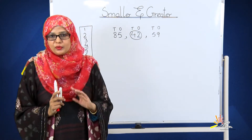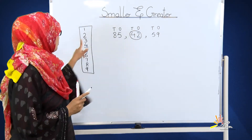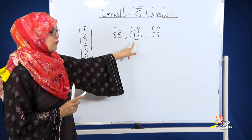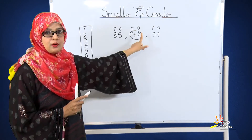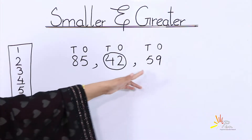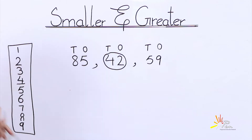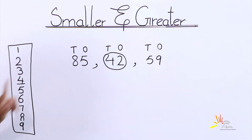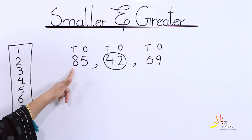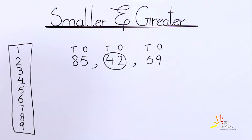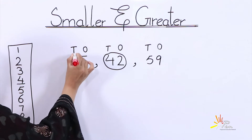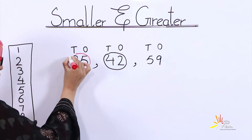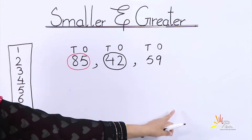Now we know that four comes first in the table, so forty-two will be considered a smaller number. Let's see five and eight in the table. We found five, but we have one more number — six, seven, eight — eight is at the end of this list. So eighty-five will be considered the greater number from these values.